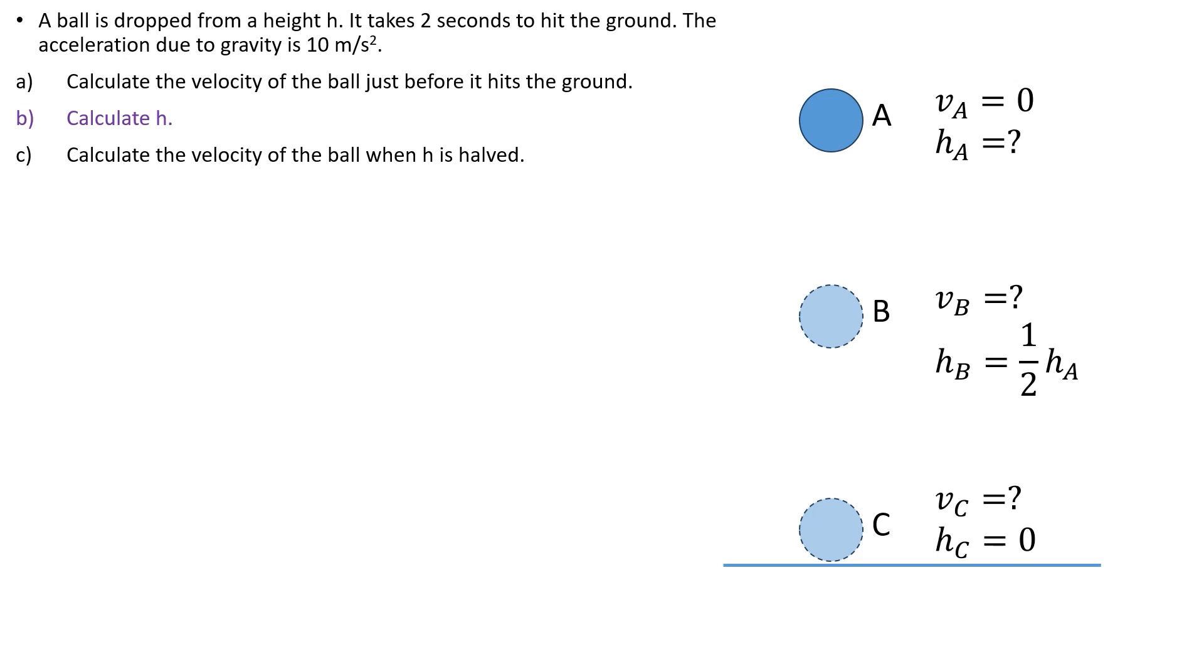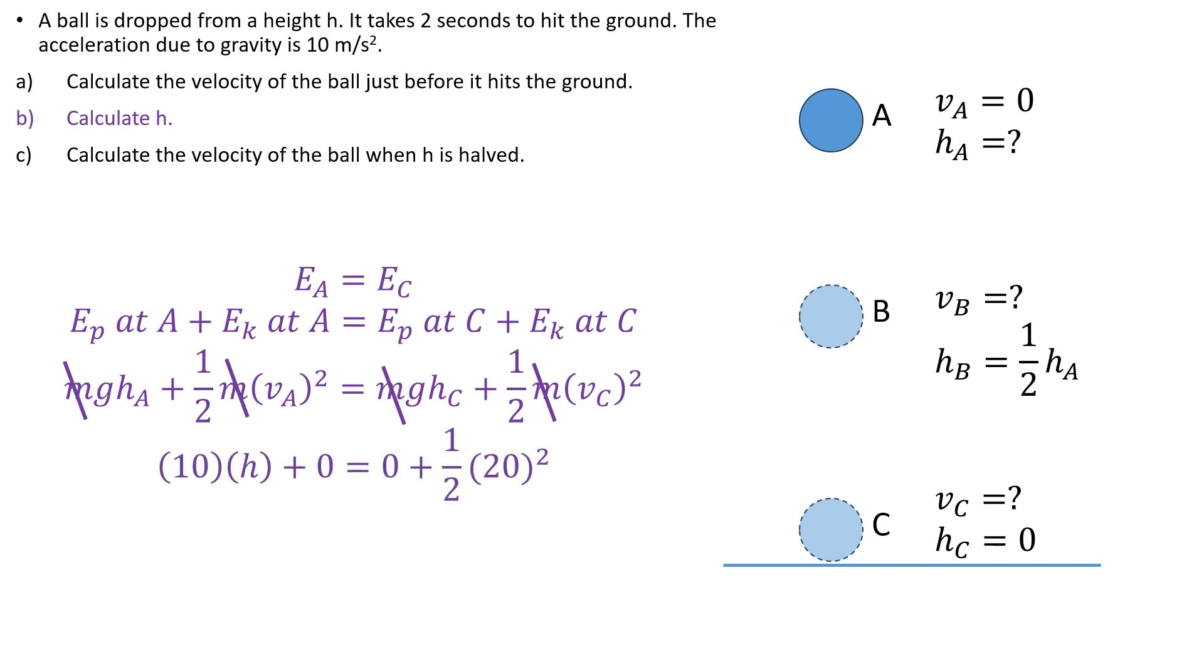Part B: Apply the principle of conservation of energy. Total energy at A equal total energy at C. Further expanding it will give us the equation: energy in gravitational potential store at A plus energy in kinetic store at A equal energy in gravitational potential store at C plus energy in kinetic store at C. Put in the formulae to form the equation. Simplify the equation by dividing both sides by M. Substitute variables into the equation. Solve for H.